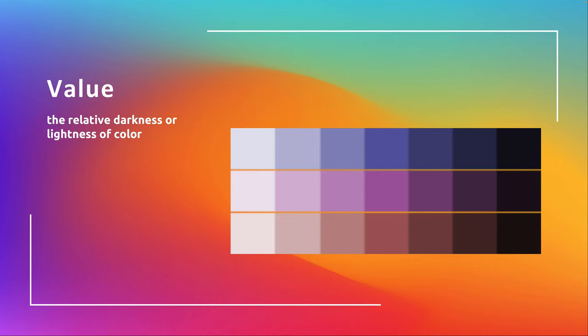Value is the relative darkness or lightness of a color — it often gets confused with saturation. Saturation doesn't technically change the color; it's just the intensity of the color. Value actually kind of changes the color — it's going to be dark or light. Even with the darkest of these three colors, they look really similar on each end of the value spectrum.